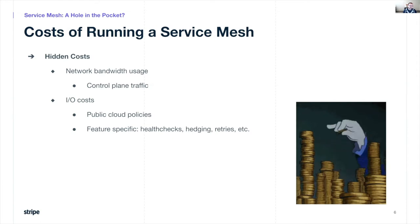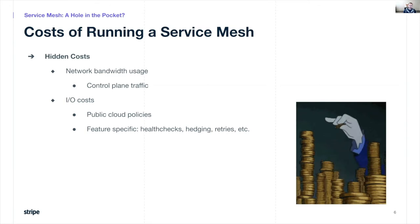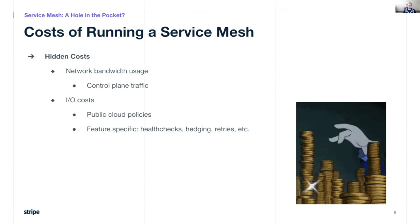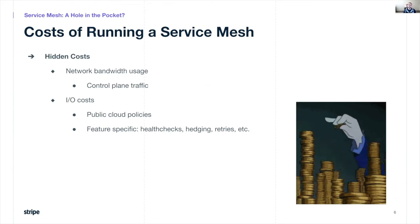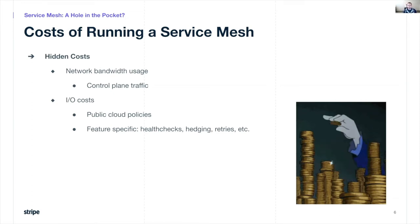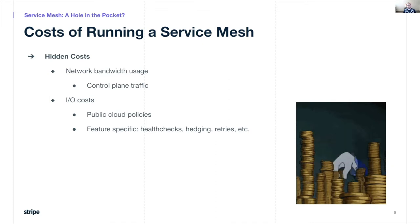There are also feature-specific costs. Health checks — especially active health checking — are sending more data across the network to check the health of all upstreams. This can turn into a star pattern sometimes with service meshes, so you have to be careful about how much traffic you're generating just from health checks. Other features like hedging and retries are reliability features we probably want, but we need to understand they're not free and we will be generating more network costs by using them.